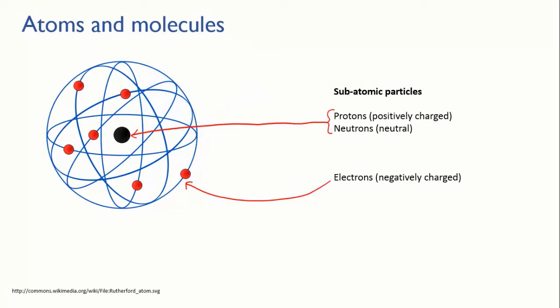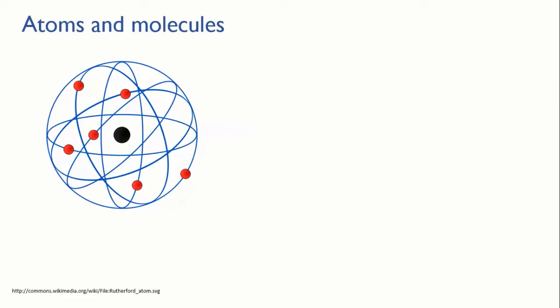This is a simplified picture, and we're going to get into more detail about what an atom is really like later on, but it'll serve us just for now. For the moment though, let's just represent single atoms as balls, since they are roughly spherical.